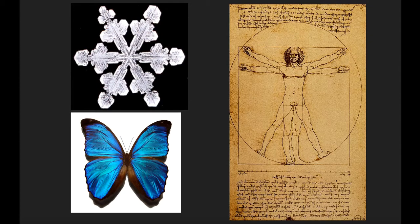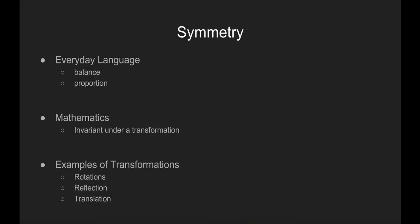First, the math. To understand group theory, let's talk about symmetry. What comes to mind? You may think of a snowflake, a butterfly, or maybe the human body. In everyday language, symmetry means beautiful and harmonious, balance and proportion.